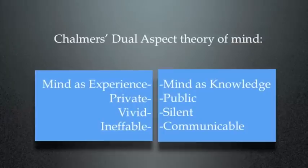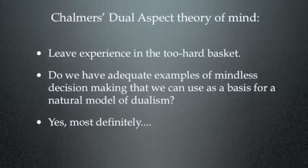Essentially, it's as though we've got two minds in our heads, intimately related but very separate, very distinct. Now his approach is simply to leave experience in the too-hard basket for the time being. I've actually given a model of experience elsewhere, but we won't go into that. It's not essential. What we want to do is give a rational, materialist, non-question-begging explanation of mind as a knowledge function. Now do we have adequate examples of mindless decision-making that we can use as a basis for a natural model of dualism? Oh yes, we most certainly do.